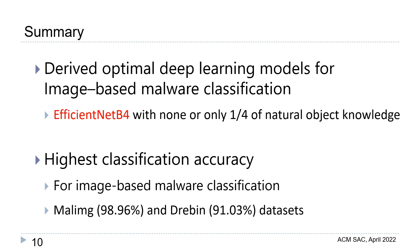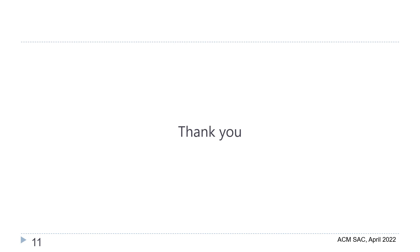Finally, we summarized this presentation. We derived optimal deep learning models for image-based malware classification. The best model was EfficientNet with none or only a small quota of natural object knowledge. We achieved the highest classification accuracy for image-based malware classification on the Marl-IMG and Drebin datasets. Thank you very much for your kind attention.